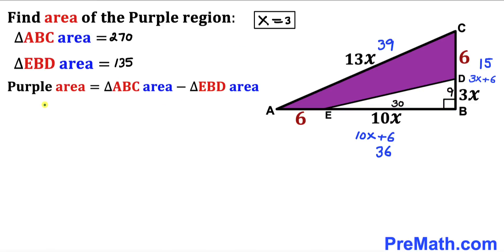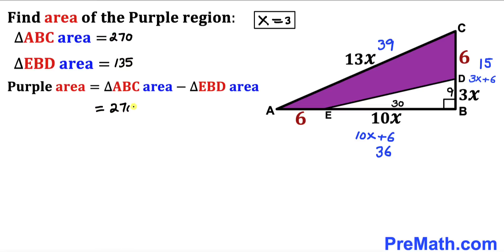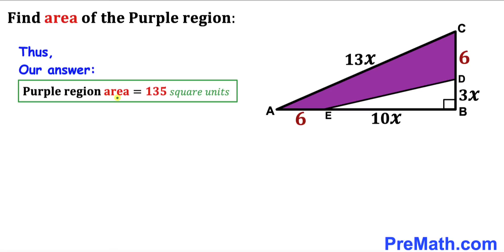For our final step, the area of the purple shaded region is triangle ABC area minus triangle EBD area: 270 minus 135, which equals 135. The area of the purple shaded region turns out to be 135 square units. Thanks for watching and please don't forget to subscribe to my channel for more exciting videos.